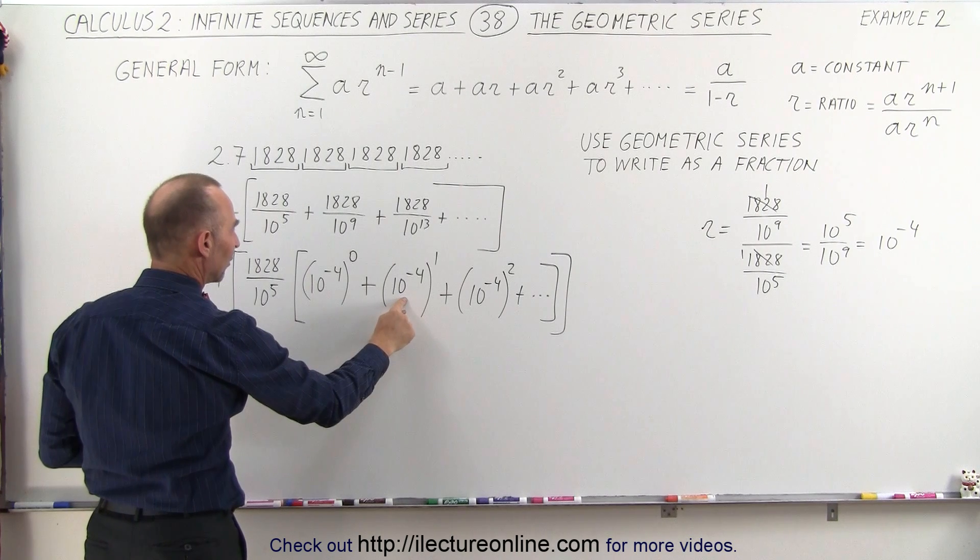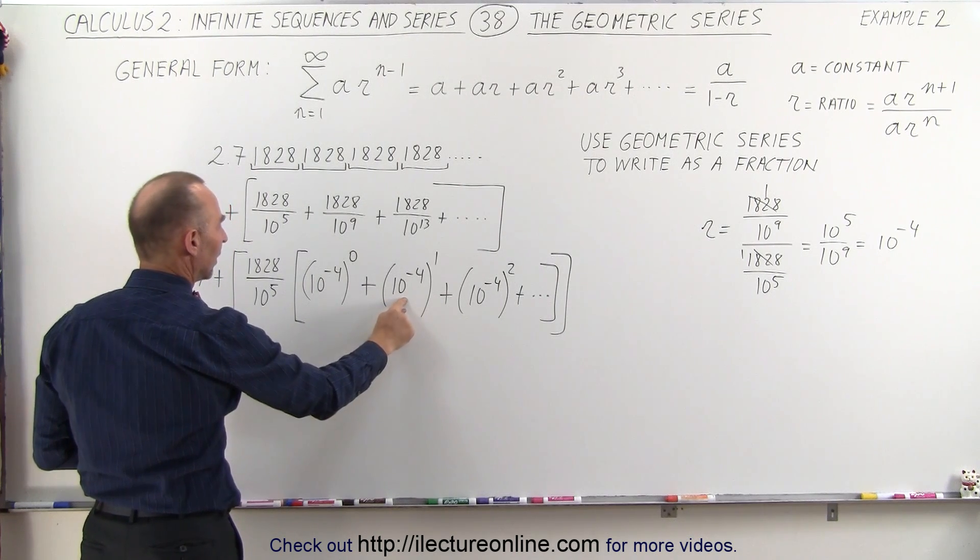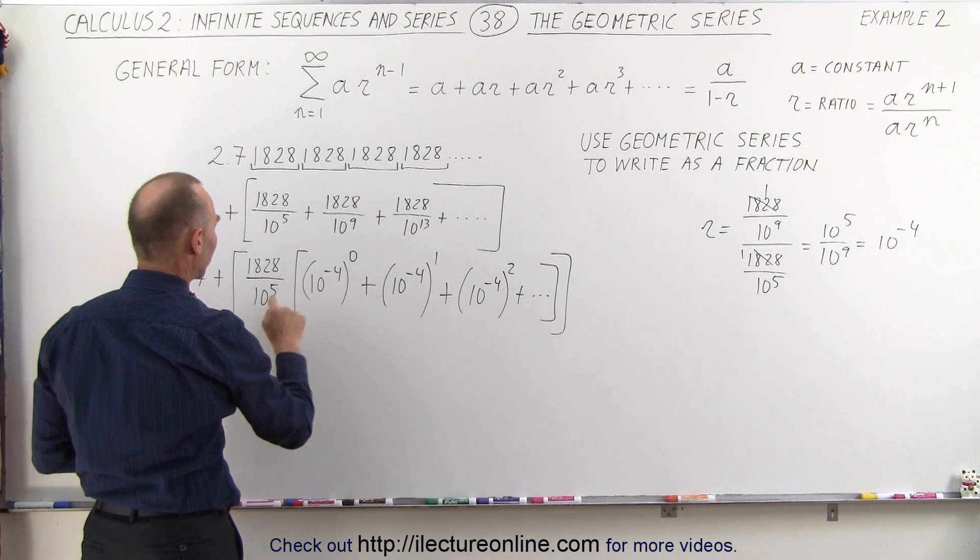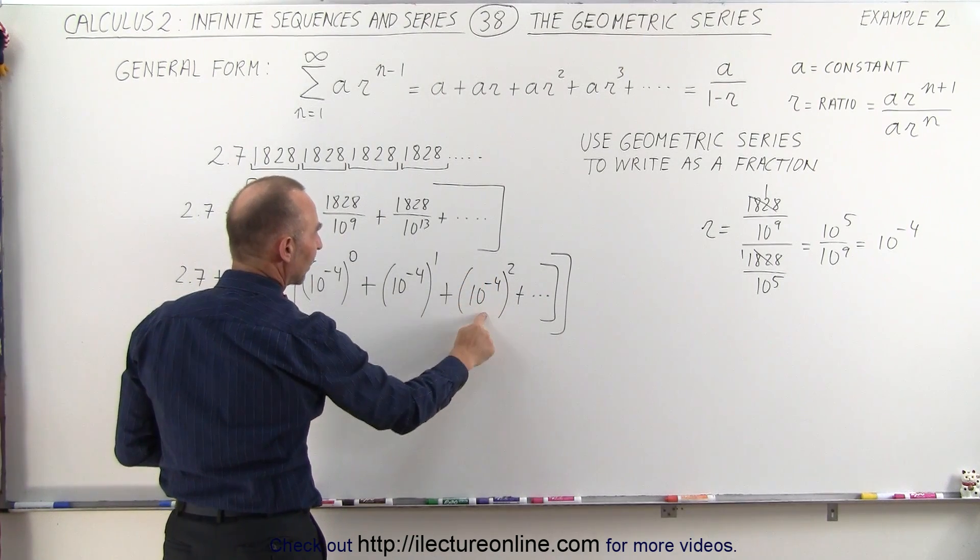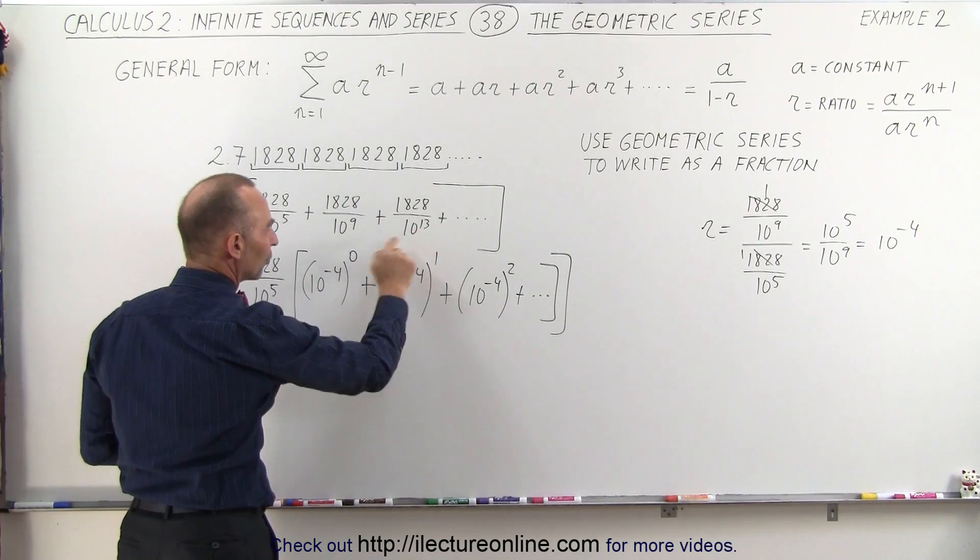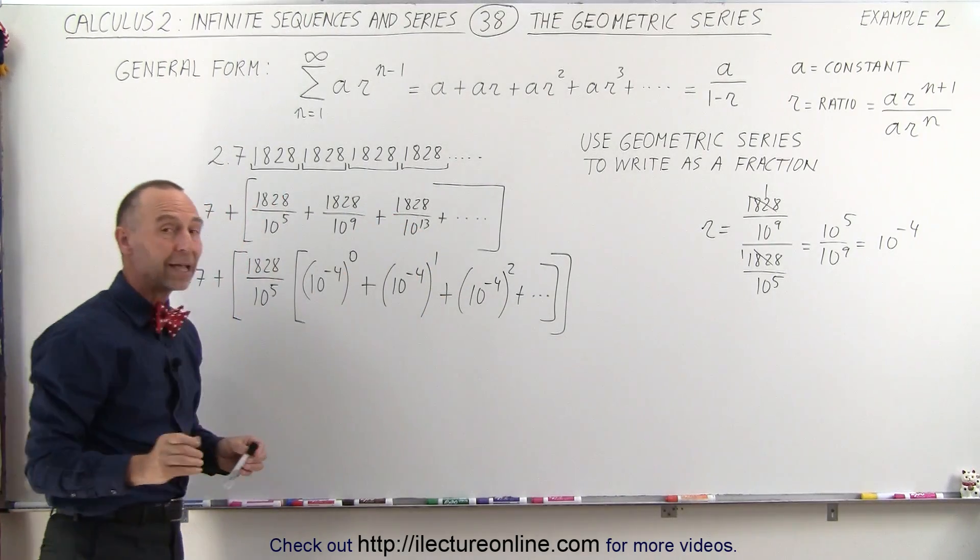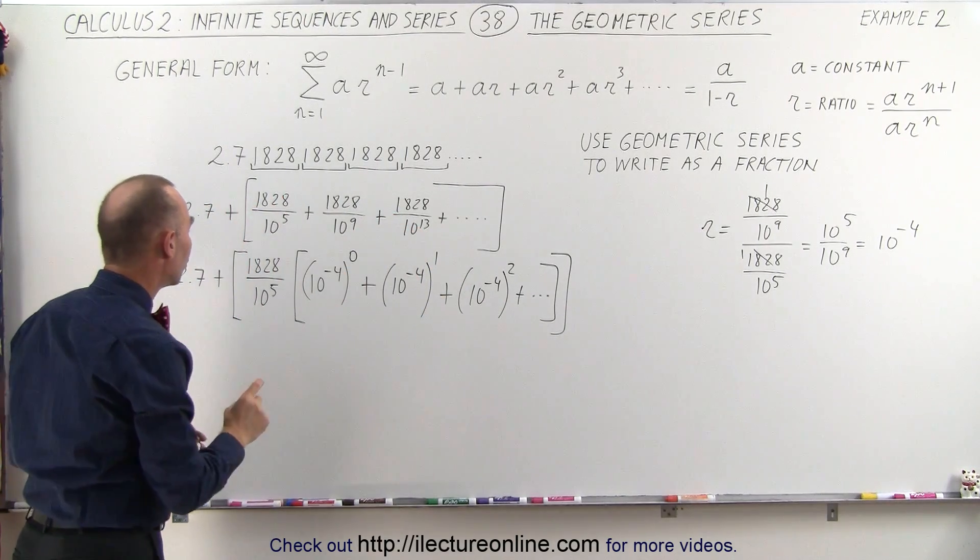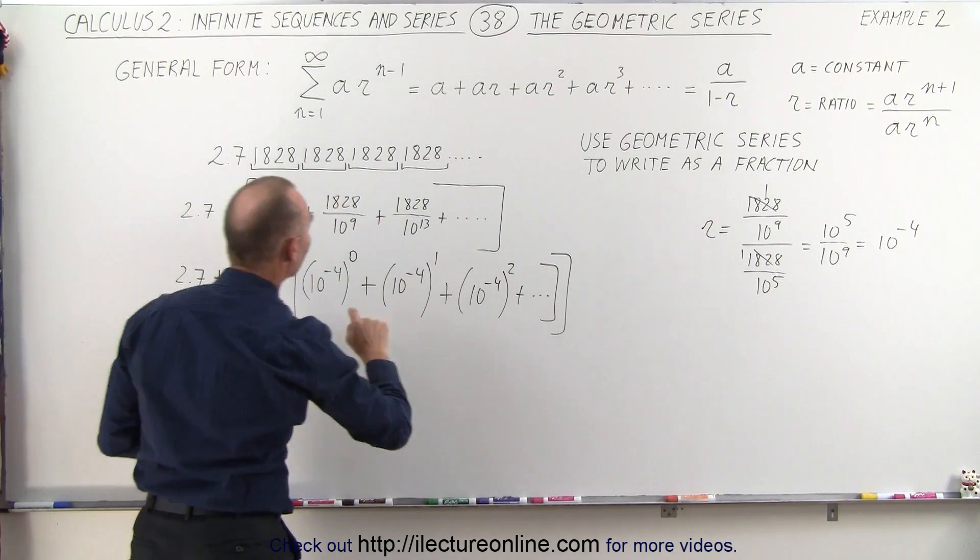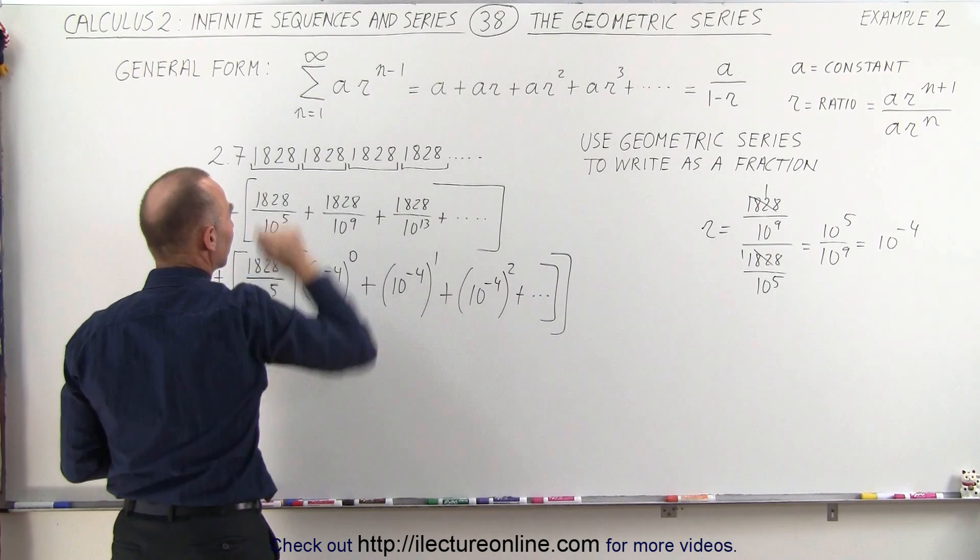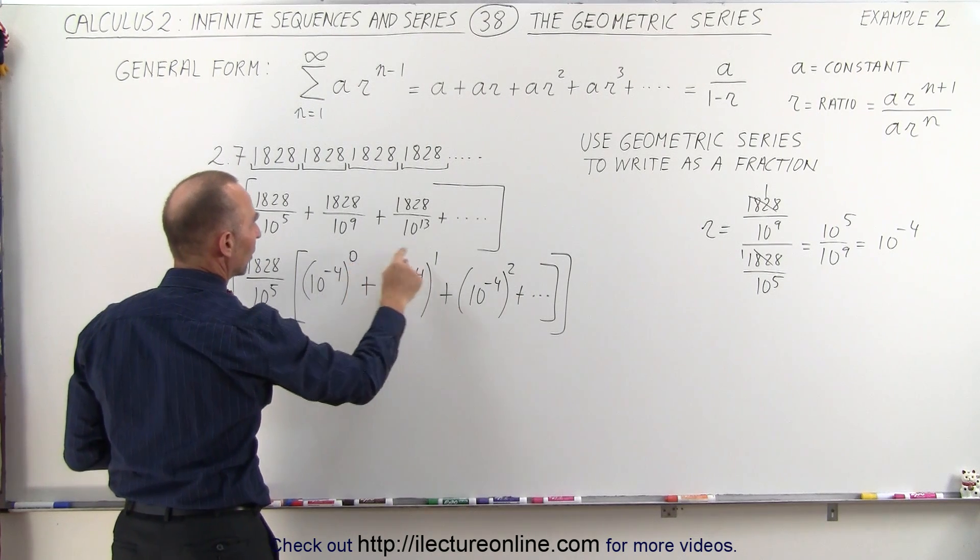Then this 10 to the minus 4 is 1 over 10 to the 4th. Multiply times this gives us 10 to the 9th. This gives us 1 over 10 to the 8th. Multiply times this gives us 10 to the 13th. So we get the original series back, but now we have it written in terms of the constant A, which is multiplied by each term, times R to the n minus 1.